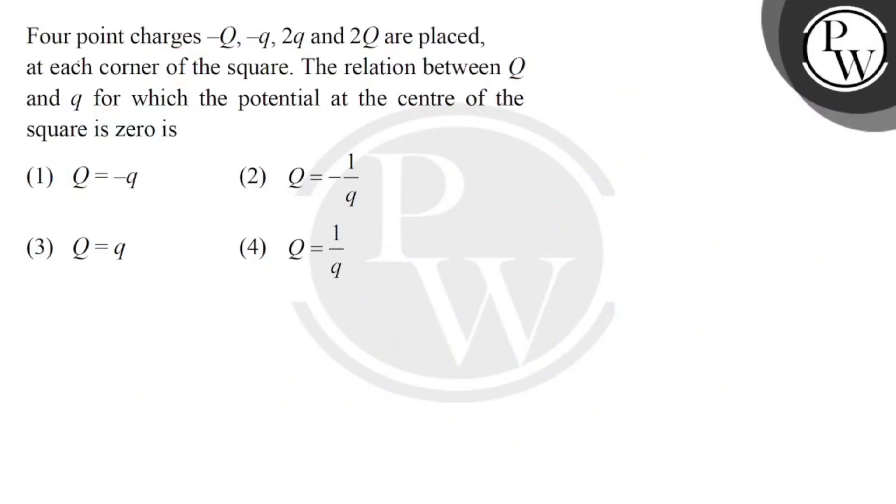Hello guys, let's read the question. Four point charges minus Q, minus Q, 2q and 2Q are placed one at each corner of the square. The relation between capital Q and small q for which the potential at the center of the square is zero is.